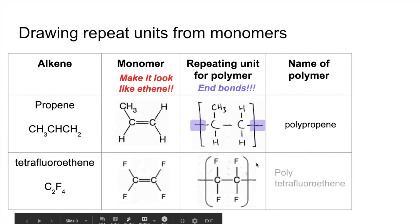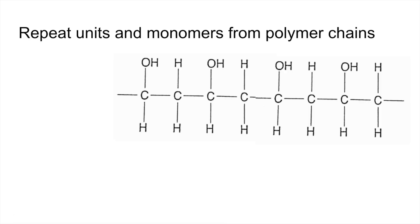Another typical thing you get asked to do is to draw the repeat unit and the monomer from a polymer chain. I've got a length of an addition polymer chain here, so we've got to identify what's repeating. You can see when we get to this point here we're starting again, so any of these sections would be a repeat unit. I've gone for that one there.